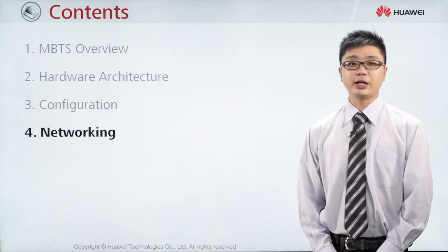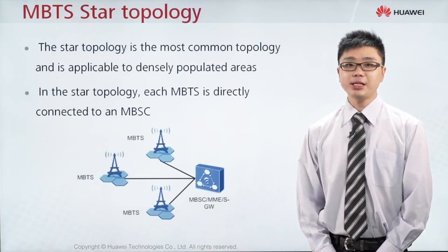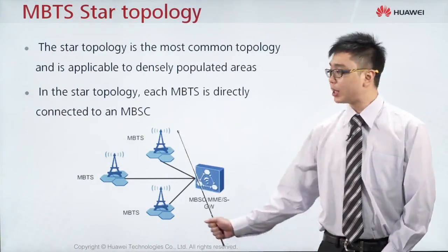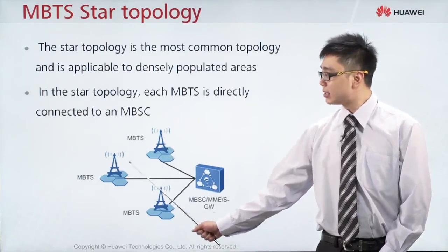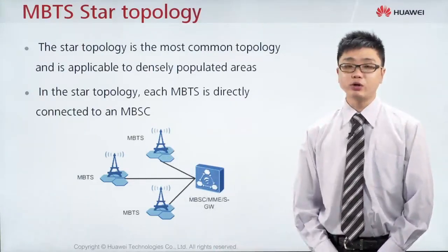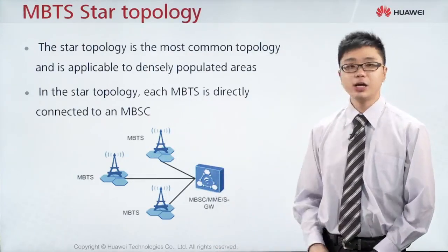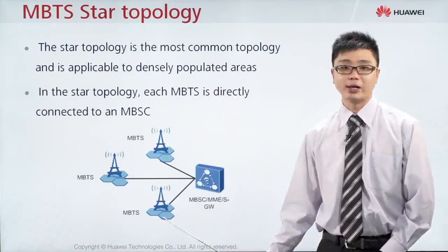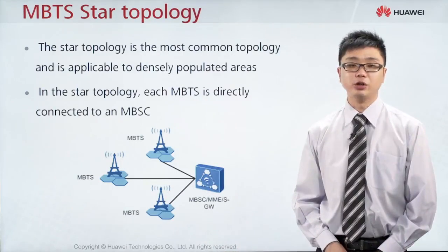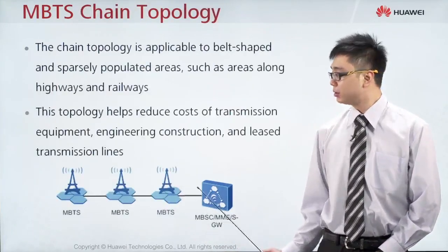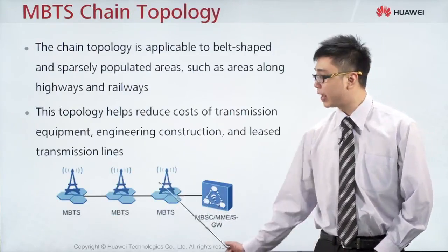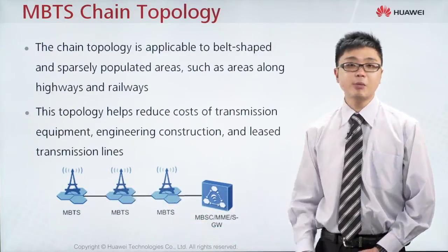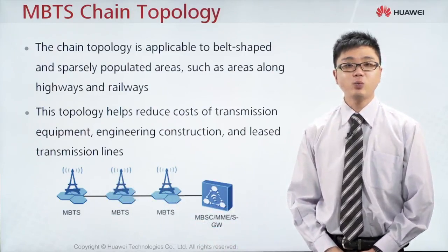The last topic we're going to cover is networking. Generally, one BTS is connected directly to the BSC, and one BSC is normally connected to more than 100 BTS. There are three types of topology. The first is star topology, where the BSC is directly connected to all BTS one by one. The second is chain topology, where BTS units are connected in a chain, like a train — one BTS connects directly to another BTS and so on.